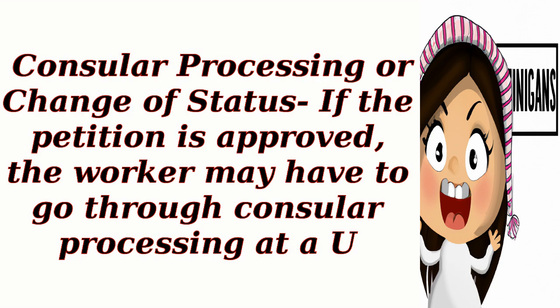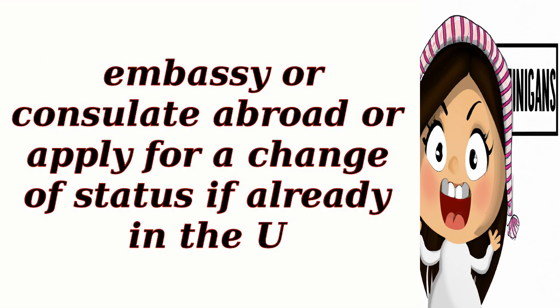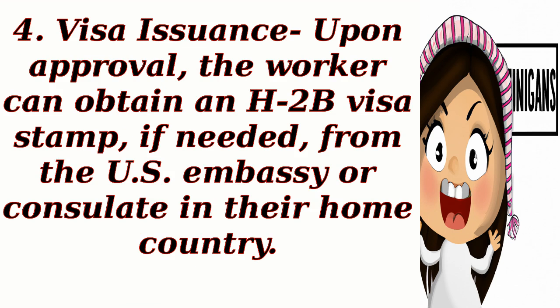Consular processing or change of status: If the petition is approved, the worker may have to go through consular processing at a U.S. Embassy or consulate abroad, or apply for a change of status if already in the U.S. Upon approval, the worker can obtain an H-2B visa stamp, if needed, from the U.S. Embassy or consulate in their home country.